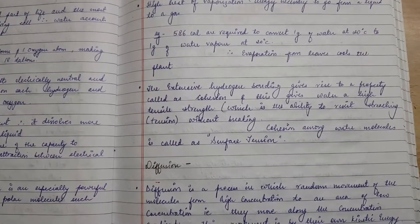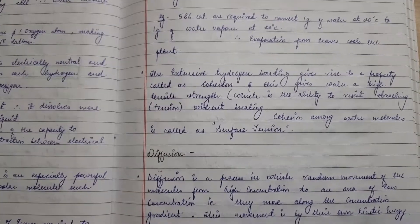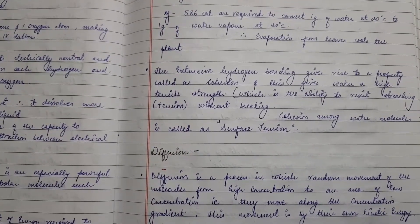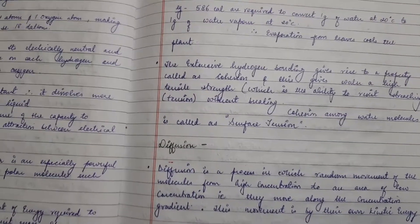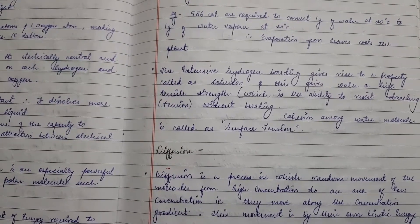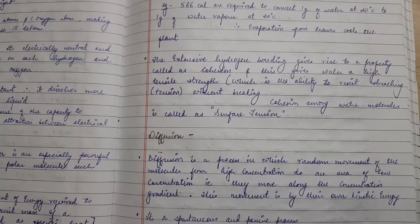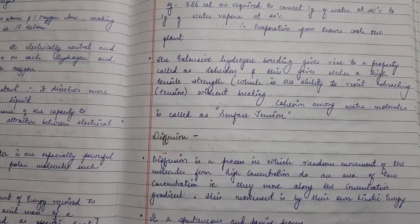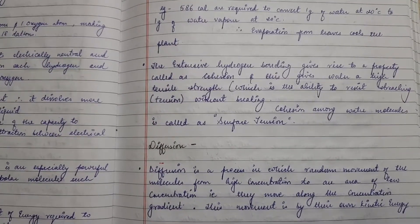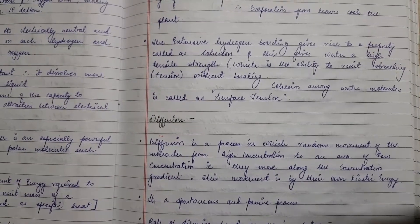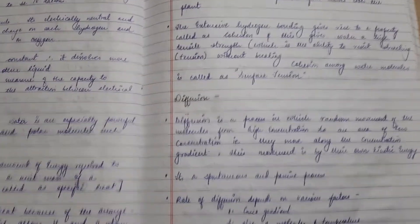Extensive hydrogen bonding gives rise to a property called cohesion, and we will later study the cohesion-tension theory. Cohesion gives water high tensile strength, meaning the ability to resist stretching without breaking — it can stretch easily up to a large distance without breaking. Cohesion among the molecules at the surface is also called surface tension.